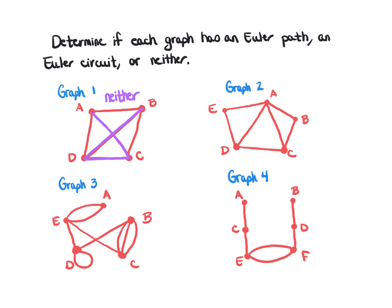With graph number two, starting at vertex D: travel D to E to A, back to D, then to C, to A, to B, and back to C. Since I started at vertex D and ended at vertex C, this graph has an Euler path.